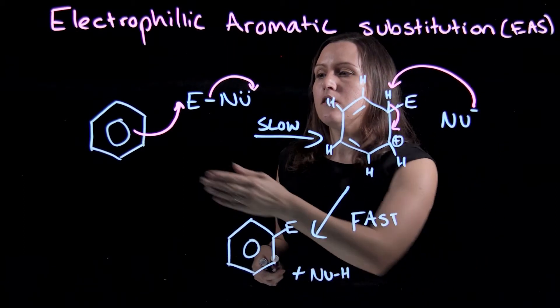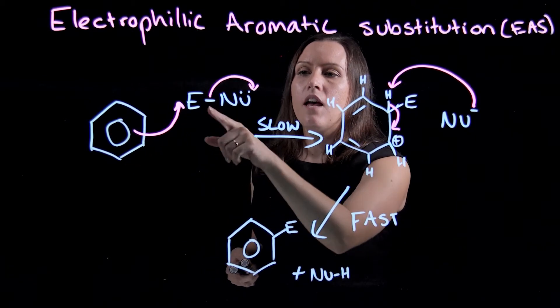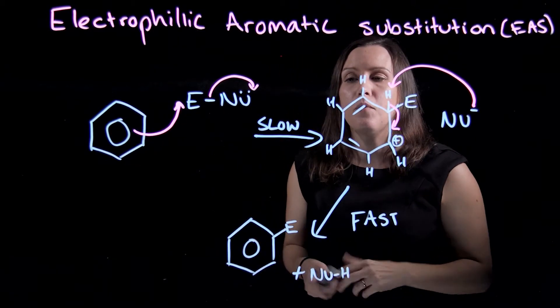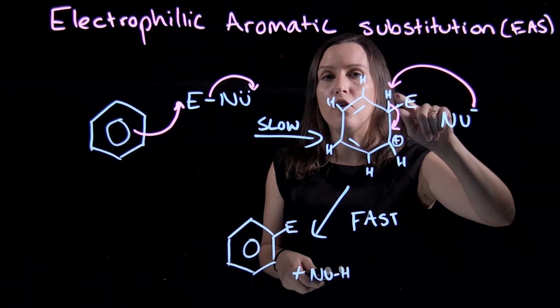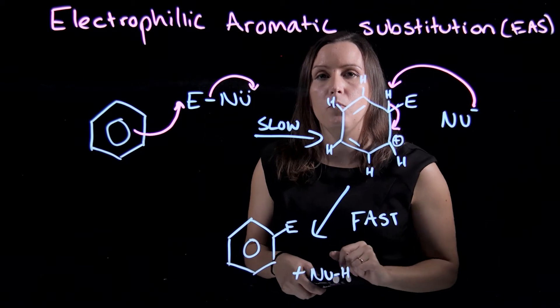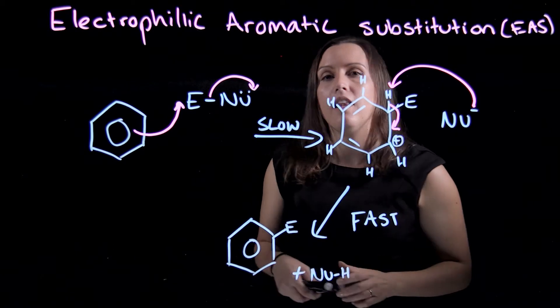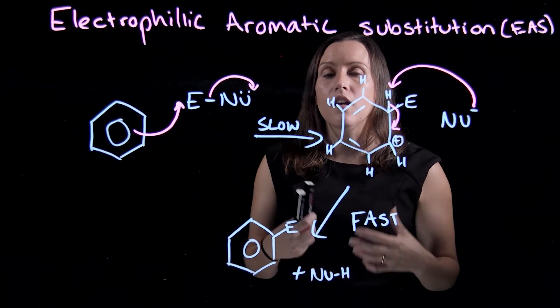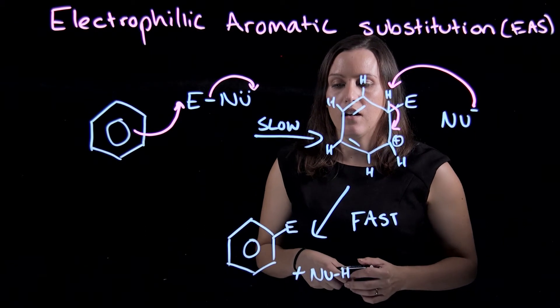So we've got our electrophilic aromatic substitution, or EAS for short. You have the delocalized electrons attacking the electrophile, forming a negative nucleophile by that bond cleavage. Then the nucleophile removes the proton that's attached to the carbon with the electrophile, and we have a very fast reaction where we have that delocalization of those electrons going back like it was in the benzene ring.